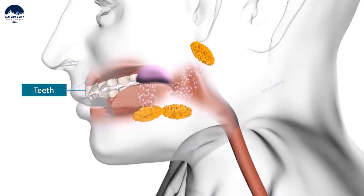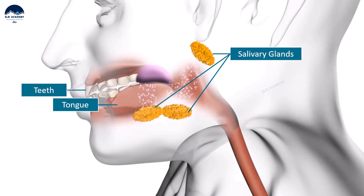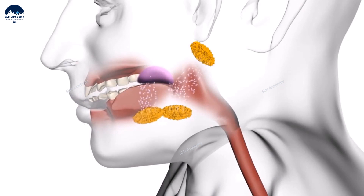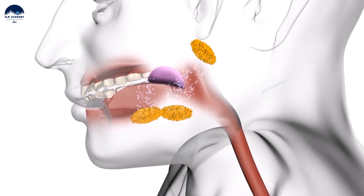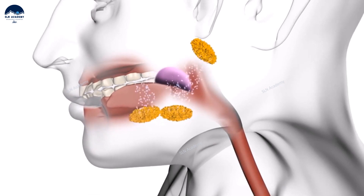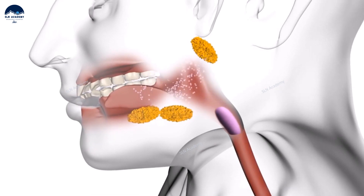The teeth tear and chop the food into small pieces. The tongue facilitates the movement of food in the mouth and helps in the process of chewing. Saliva moistens the food and the nutrients present in saliva convert the carbohydrates such as starch into sugar. Swallowing is done by muscle movements of the tongue and mouth which move the food into the throat or pharynx.